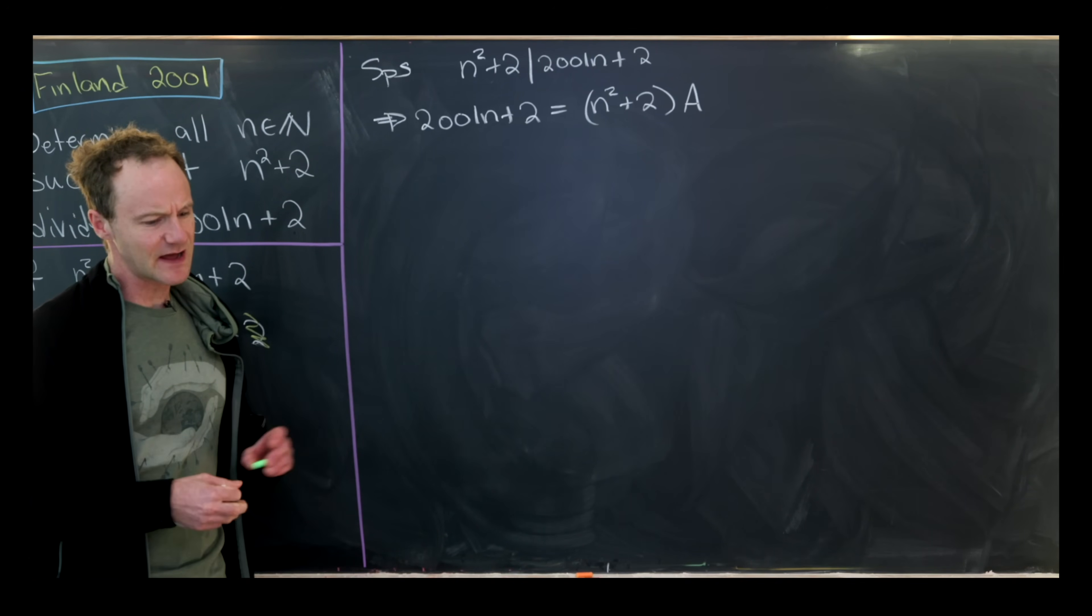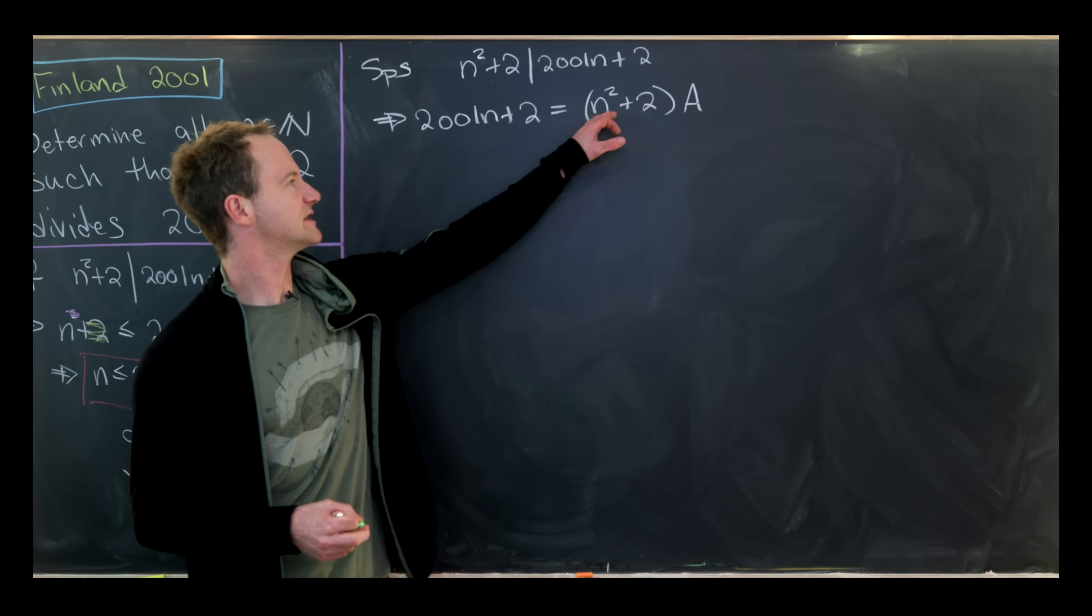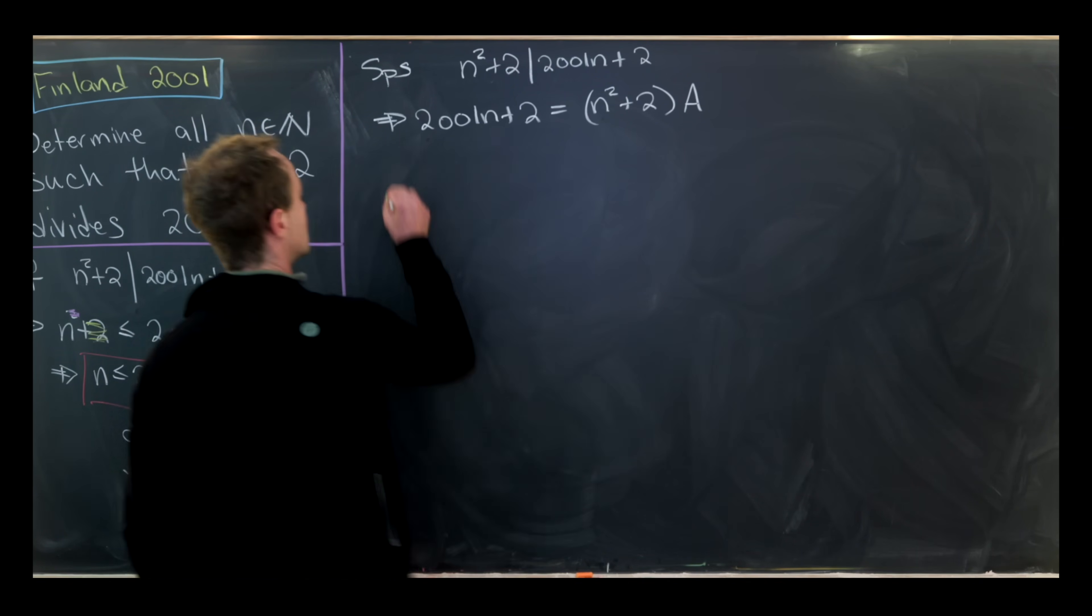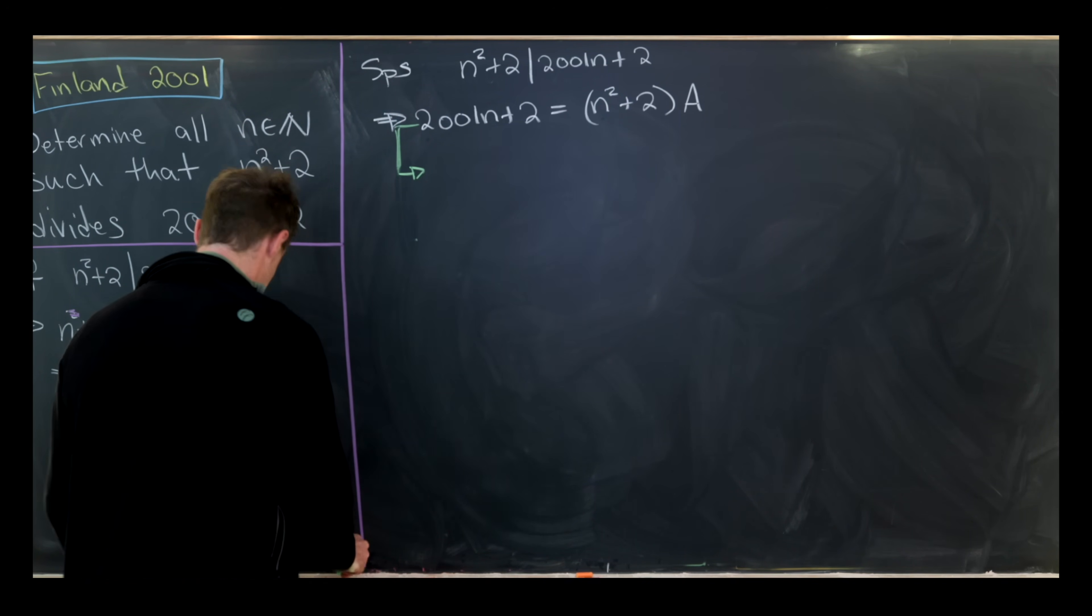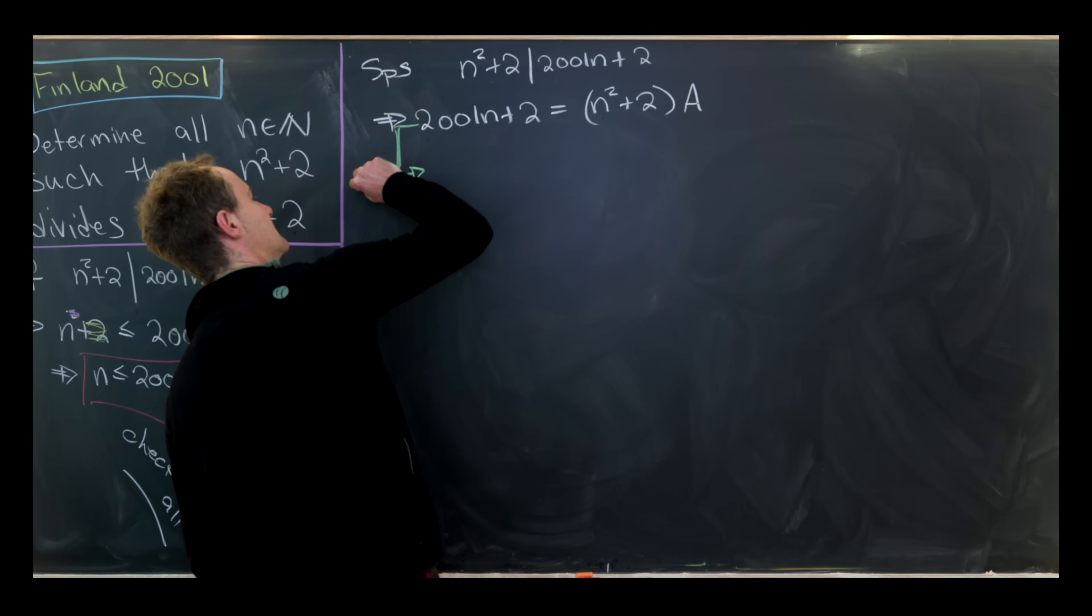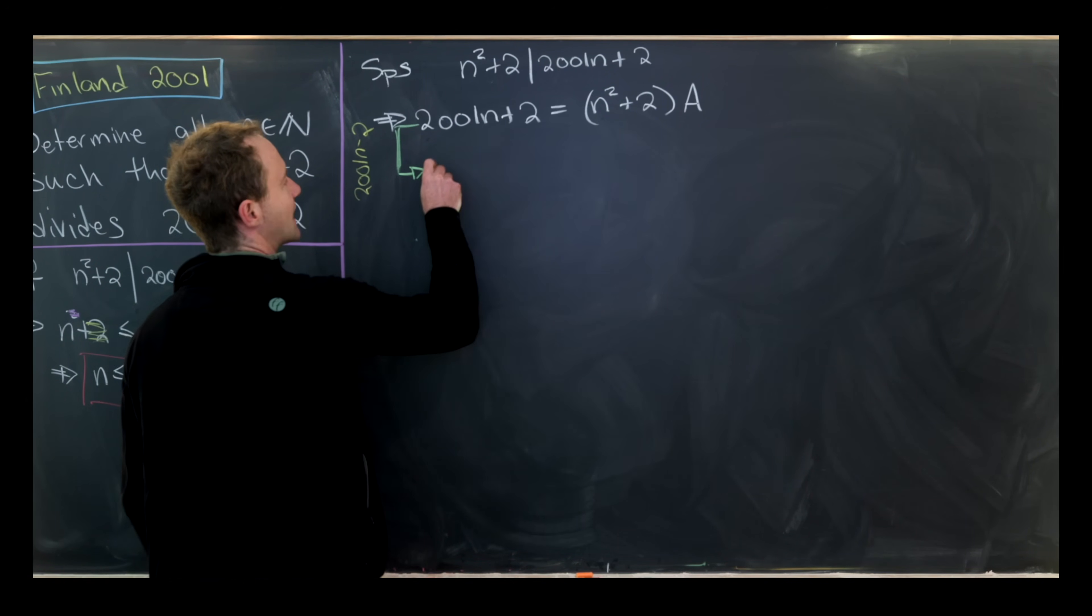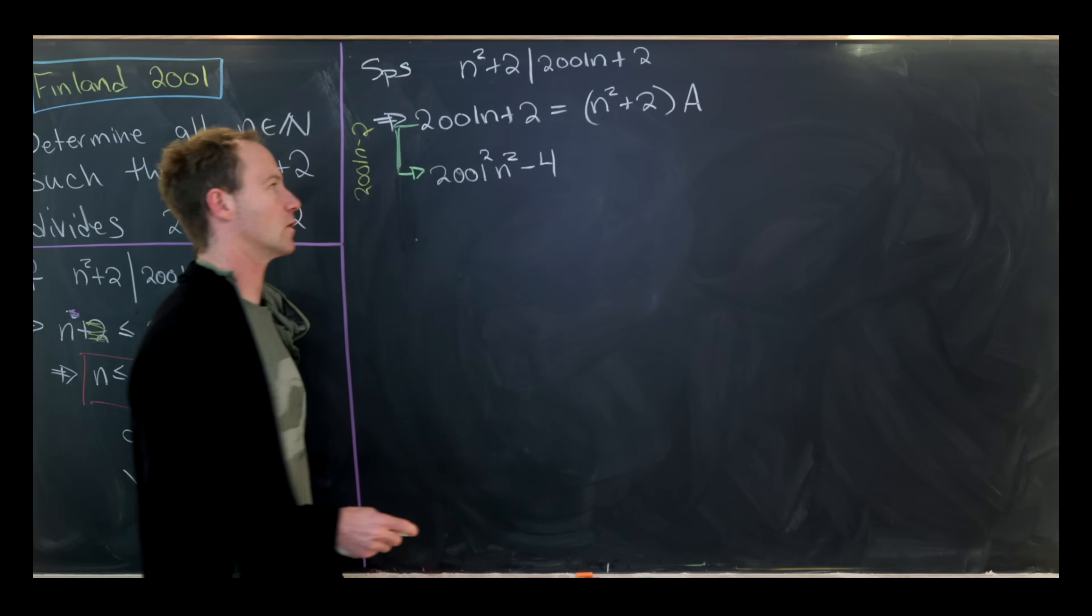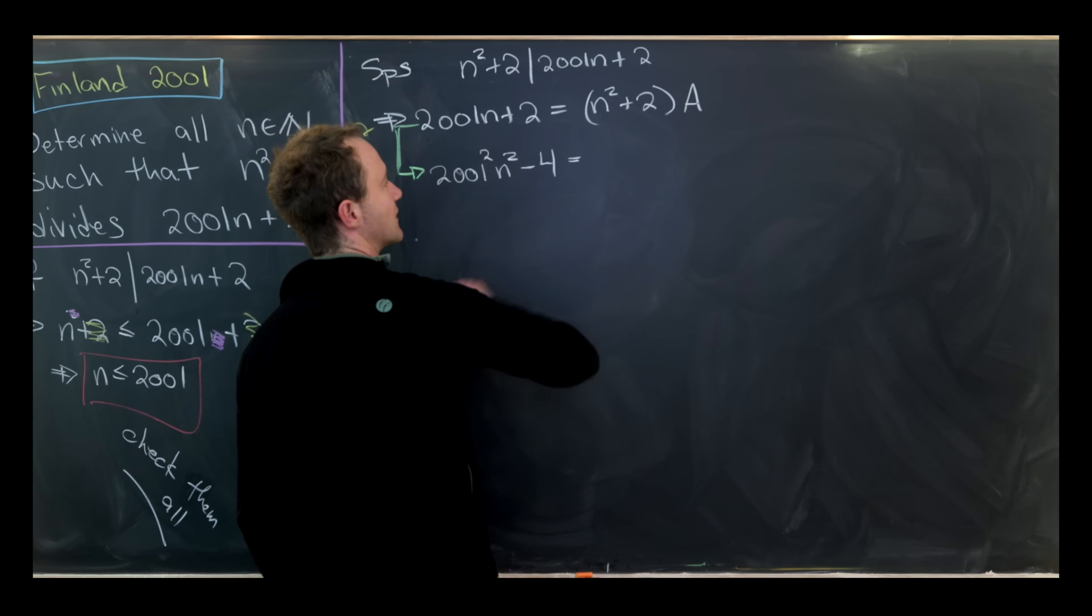Now we're going to play a couple of games. Notice I've got an n² over here. Since I've got an n² over here, perhaps I want to get an n² over here on the left-hand side as well. I can achieve that by multiplying by something that looks like the conjugate of this left-hand side. Let's multiply by 2001n - 2 and see what that leaves us with. That will leave us with 2001² times n² - 4, just by the difference of squares type factorization.